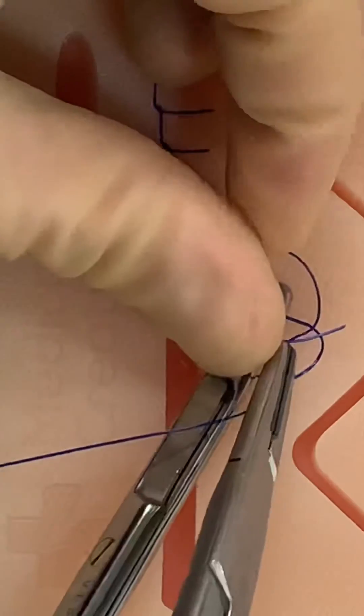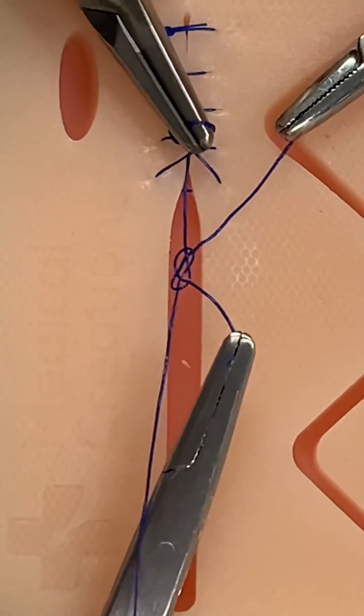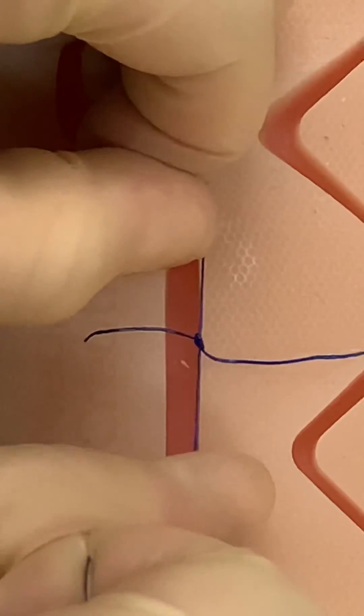Then thread the end through this new loop to form a second fish that's facing the opposite direction to the first. The knot is tightened by pulling the new and old suture ends in opposite directions.